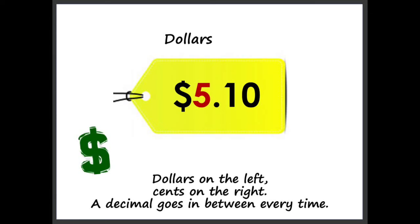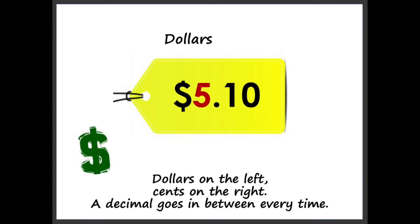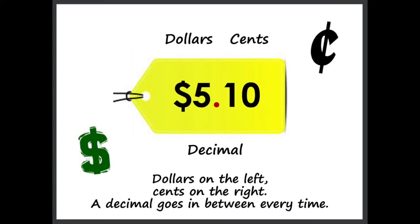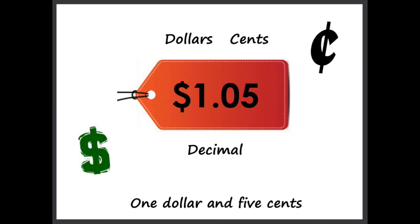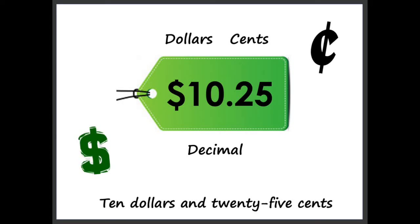Dollar on the left, cents on the right, a decimal goes in between every time. Dollar on the left, cents on the right, a decimal goes in between every time. $1.05, $5.10, $0.10, $0.25.